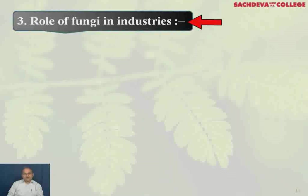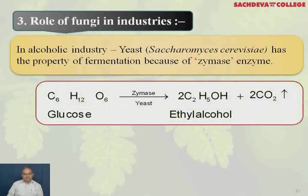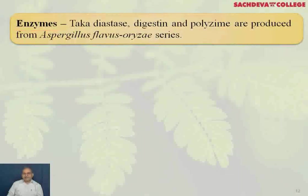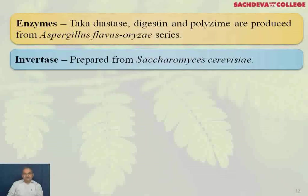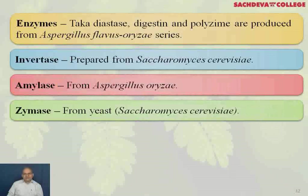Role of fungi in industries: in the alcoholic industry, Saccharomyces cerevisiae has the property of fermentation because it has an enzyme system called zymase, which converts glucose into ethyl alcohol — the basis of the brewing industry. Enzymes such as Takadiastase, Digestin, and Polyzyme are produced from Aspergillus oryzae. Invertase is prepared from Saccharomyces cerevisiae, amylase from Aspergillus oryzae, and zymase from yeast.